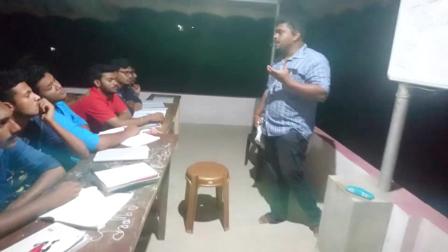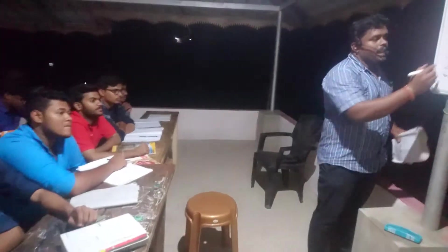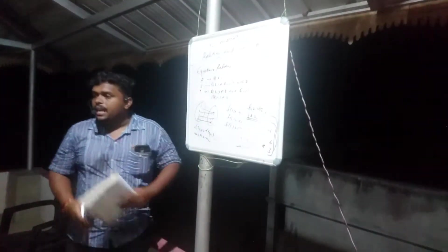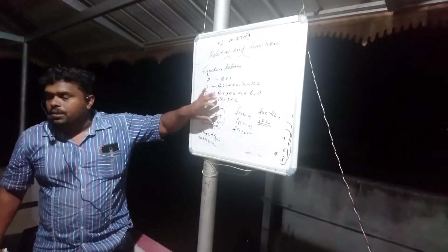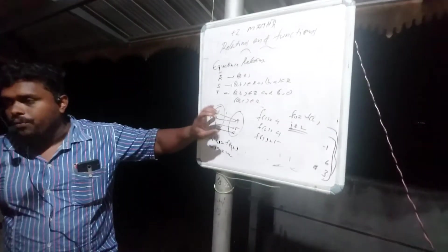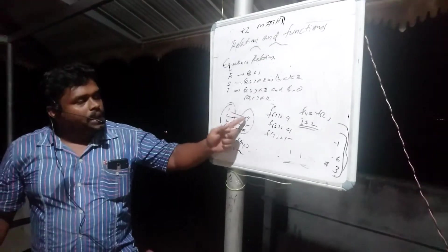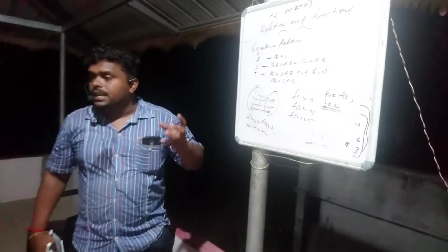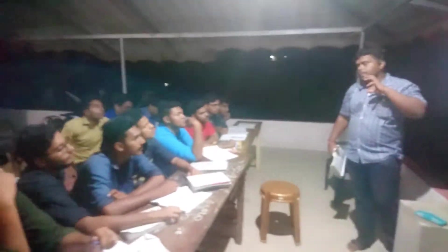Another type of function is the onto function. The main point of an onto function is that the range and codomain are equal. For example, if four is related to six, the codomain is {4, 5, 6} and its range will also be {4, 5, 6}. So range and codomain are equal in onto functions. A function that is both one-to-one and onto is called a bijective function.